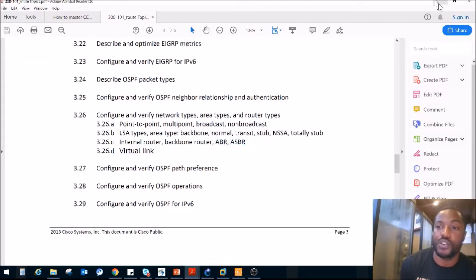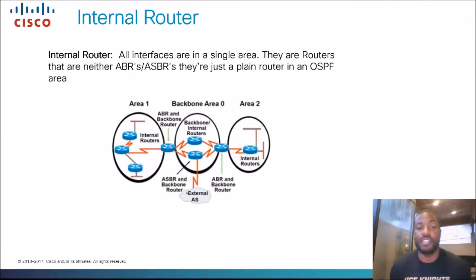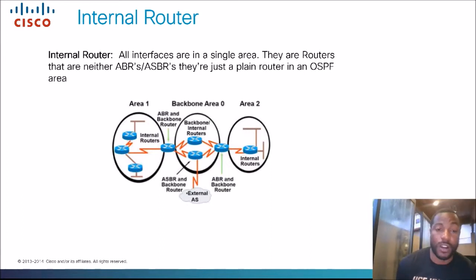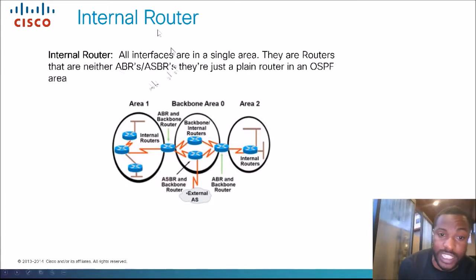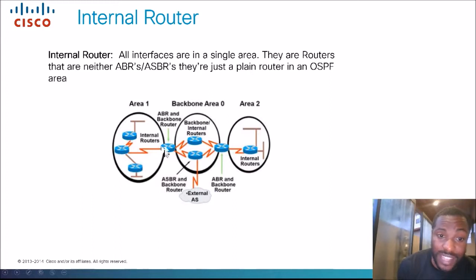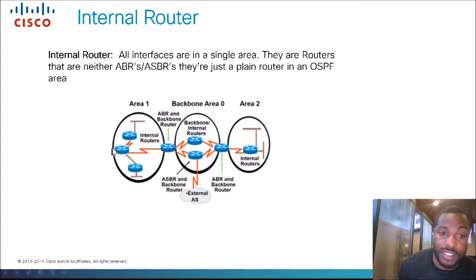Let's start off with an Internal router. An Internal router is a router that is internal to an area — it has all interfaces in a single area. They are routers that are neither an ABR nor an ASBR; they're just a plain old router in an OSPF area. For example, a router with two interfaces both in the same area, with no interfaces on an area border and no connection to another autonomous system — those are all Internal routers.